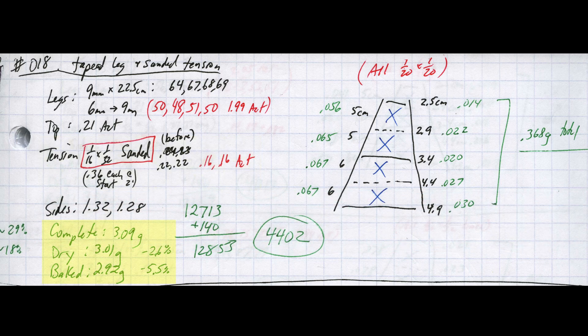I also decided to bake this bridge to reduce the mass as much as possible before testing. You can see three weights in my notes: complete, dry, and baked. The complete weight was the mass right after I finished building it. The dry weight was the weight after spending about a day in my dry box containing silica gel packs, which gets the relative humidity down to about 18%. The baked weight is the result of putting the bridge in the oven at 200 degrees Fahrenheit for 20 minutes. This gets roughly an additional 3% weight reduction from even the dry box, which is very nice, but it doesn't come without risks or hassle if you want to use this for an actual competition. I will probably create a whole separate video on this process to show the pros and cons.